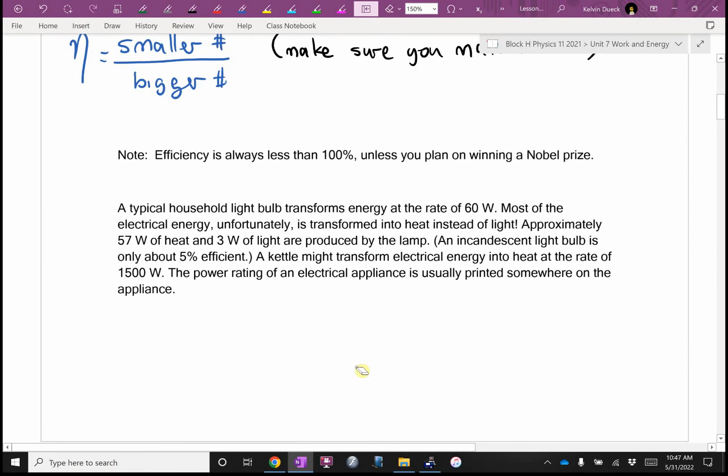So a typical light bulb transforms energy at a rate of 60 watts, 60 joules per second. Most of the electrical energy coming out of the plug is transformed into heat instead of light, especially if it's the old-style incandescent bulbs. So only about 3 watts of power are light. About 57 watts goes into heat. So an incandescent bulb would only be about 5% efficient. I would say I get 3 watts out divided by 60 watts in times 100%. Is it 5% efficient?